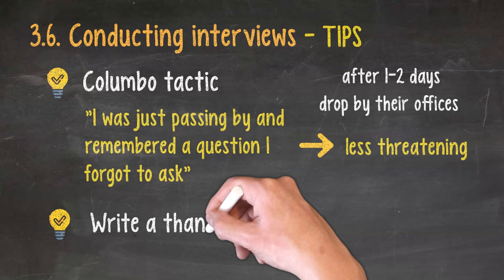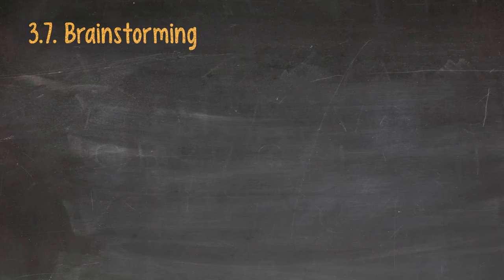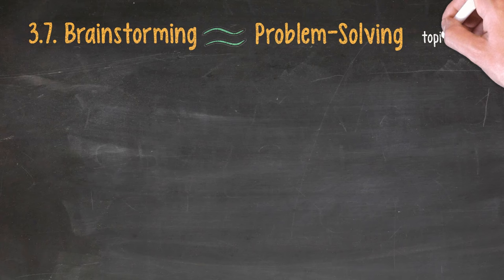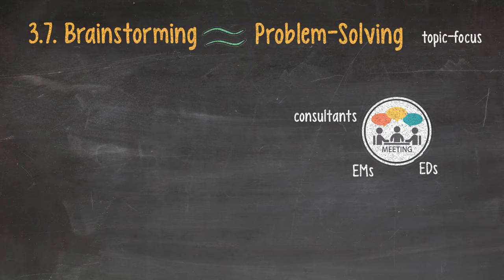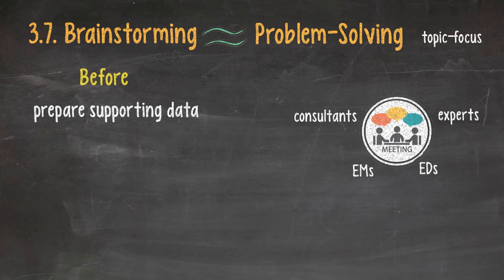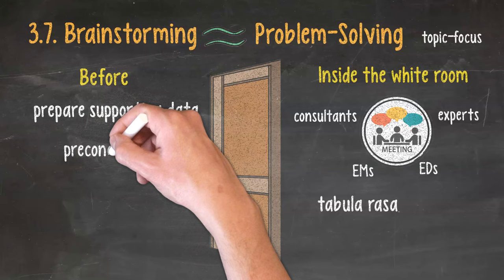3.7 Brainstorming at McKinsey. In McKinsey, we often use the word problem-solving interchangeably with brainstorming sessions. It's a very topic-focused meeting within McKinsey teams, consisting of the consultant in charge, the EM, and sometimes even the ED and experts. Before the session, prepare in advance as much supporting data as possible. It will come in handy throughout the process. Inside the white room, start with a tabula rasa, a clean slate. When you get your team into the room, leave your preconceptions at the door. Bring in only the facts and find new ways of looking at them.